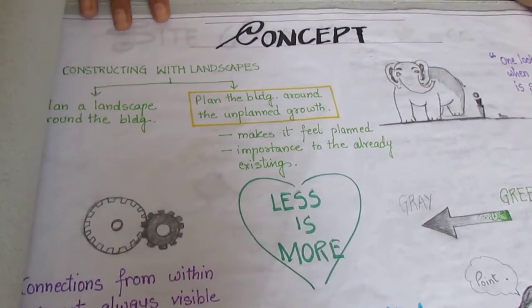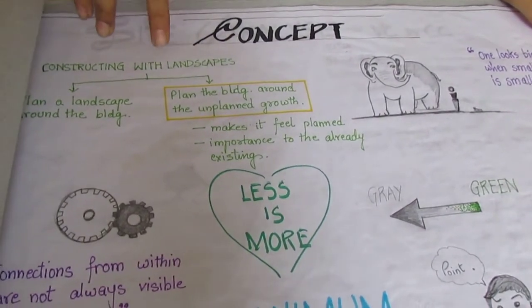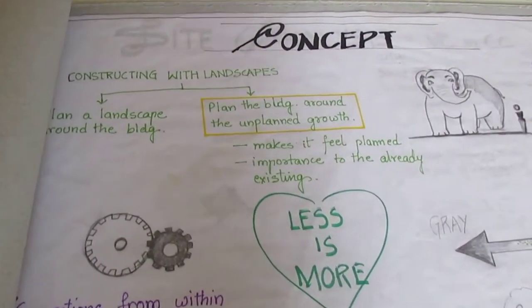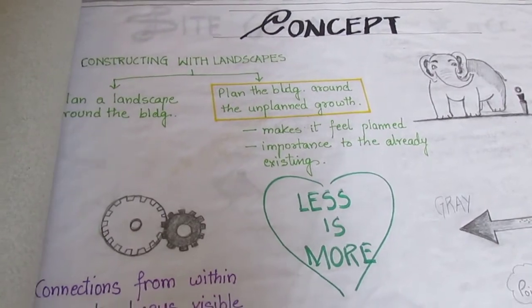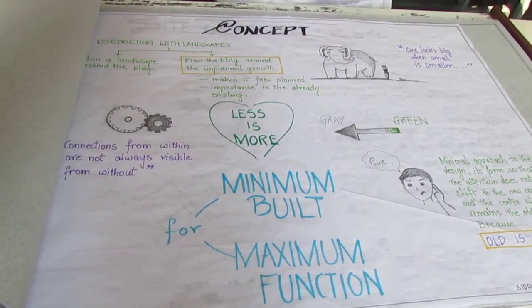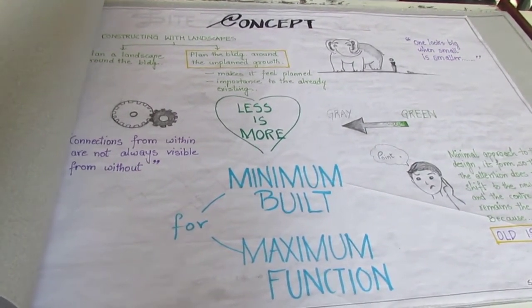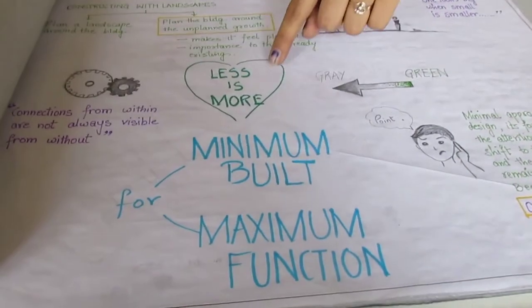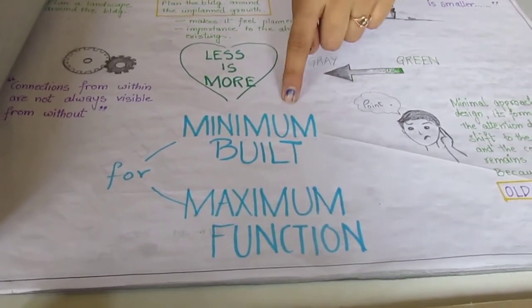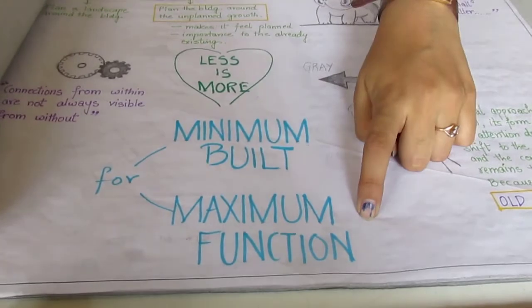This was just a rough concept sheet which I derived. I wanted to construct within the unconstructed and the existing trees that were already there, and create my building within that. So I went with the concept of less is more and built minimum for the maximum function.